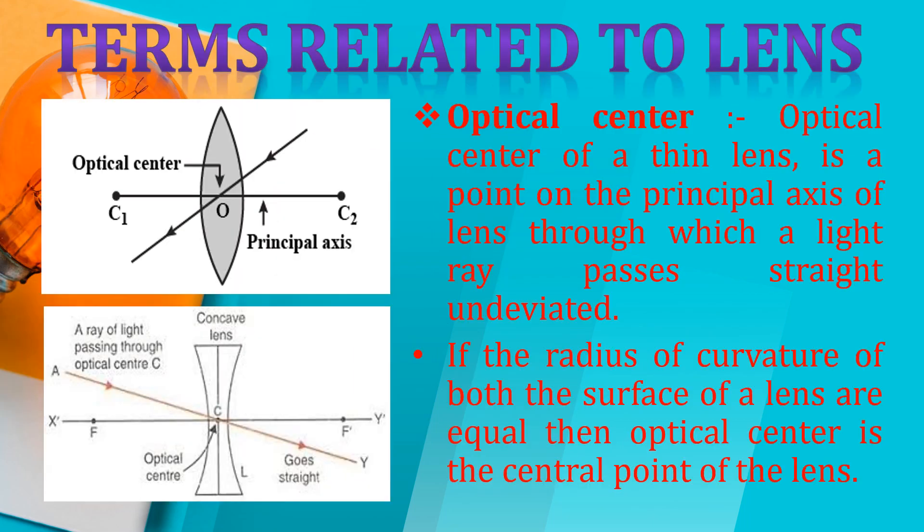The center of the two imaginary spheres of which the lens is a part is called the center of curvature of the lens. Just as I told you in mirror — if we take the curved surface and complete it as a full sphere, the center of that sphere is the center of curvature. We represent it as C. A lens has two centers of curvature with respect to its two curved surfaces, represented as C1 and C2.